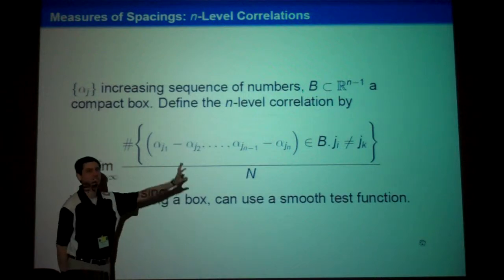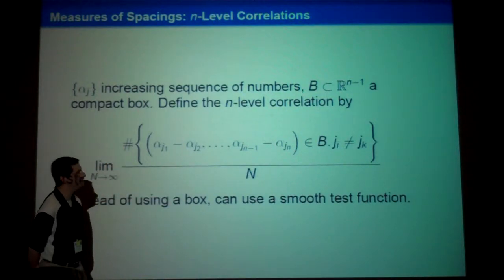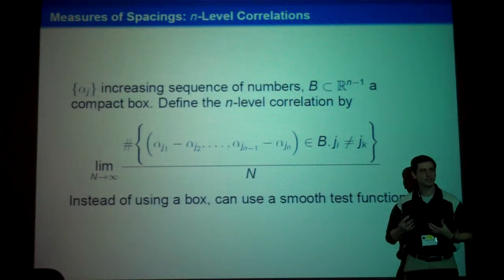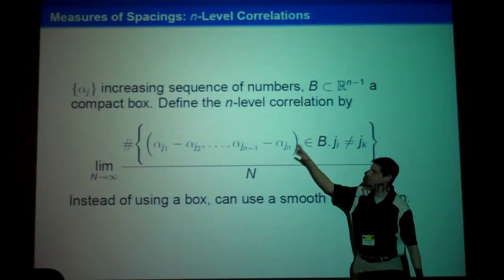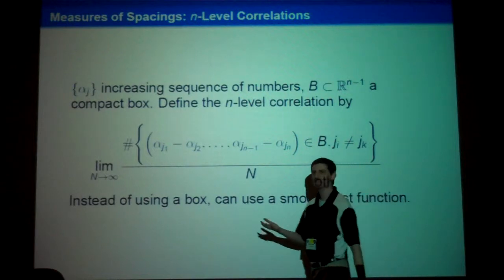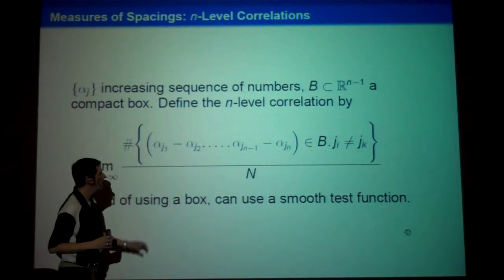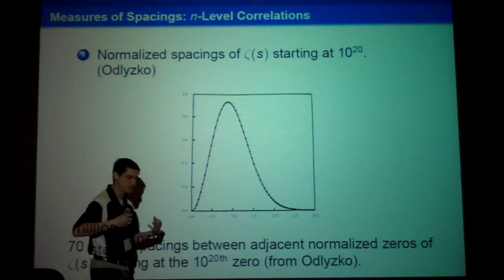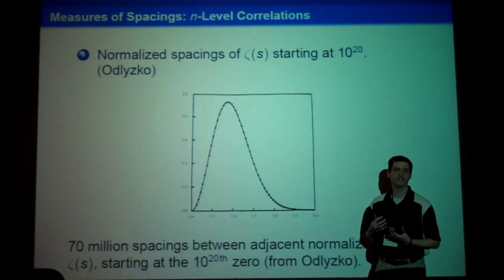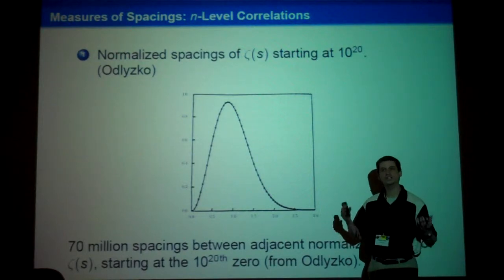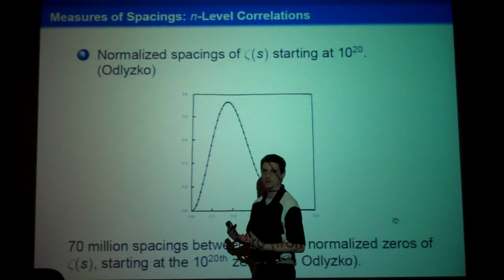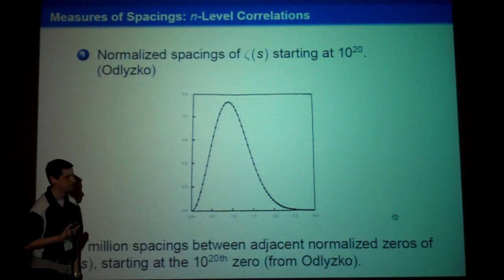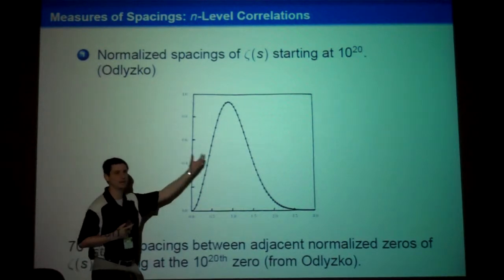The first statistic is the n-level correlation — think of just the pair-level correlation. I take my events: eigenvalues, energy levels, spacings between primes. I look at how often their difference lies in a given box. If you're an analytic number theorist, instead of a box with sharp cutoffs you would use some kind of smooth counting and get a very nice statistic. Odlyzko looked at the spacings between adjacent zeros of the Riemann zeta function, which is very similar to looking at correlations — if you understand the correlations for all n, you can use this to get the spacing measure.